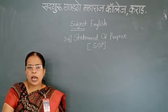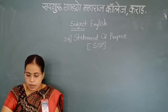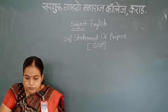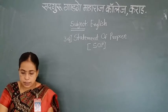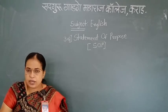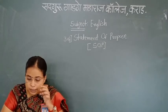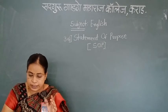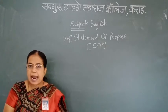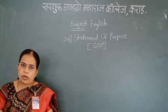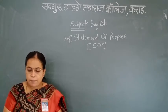Firstly, we are going to solve icebreakers. See page number 153. First question: match the professions with the desired qualities. In the first column, professions are given, and in the next column, qualities of the profession are given, and we have to match the pairs.